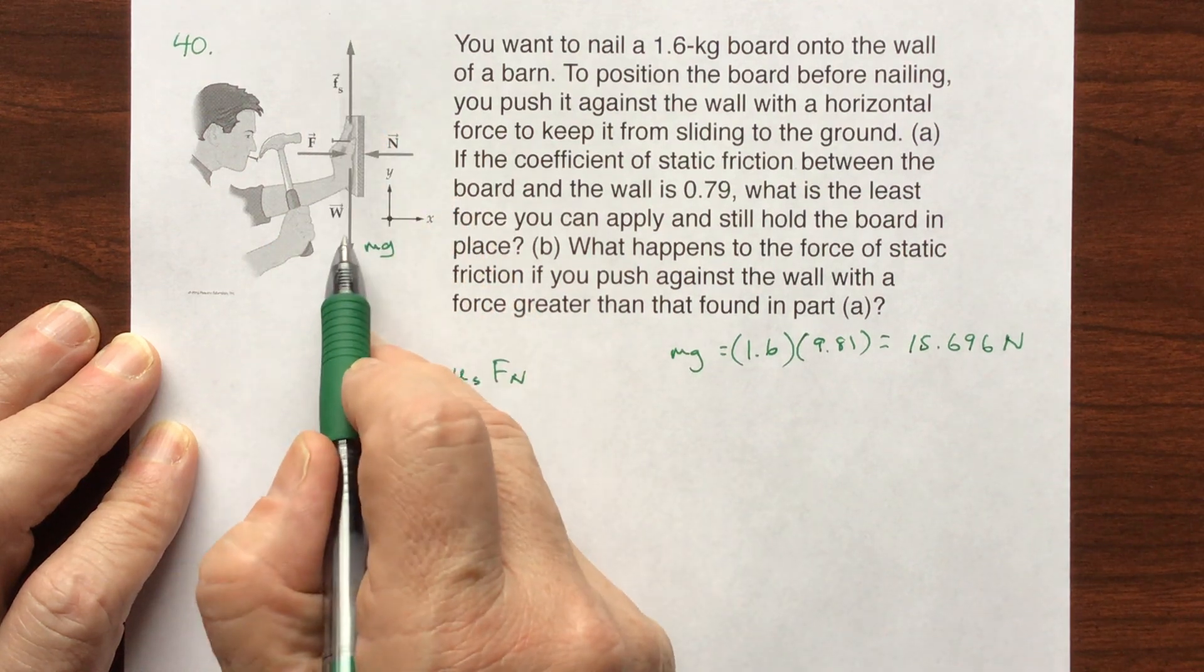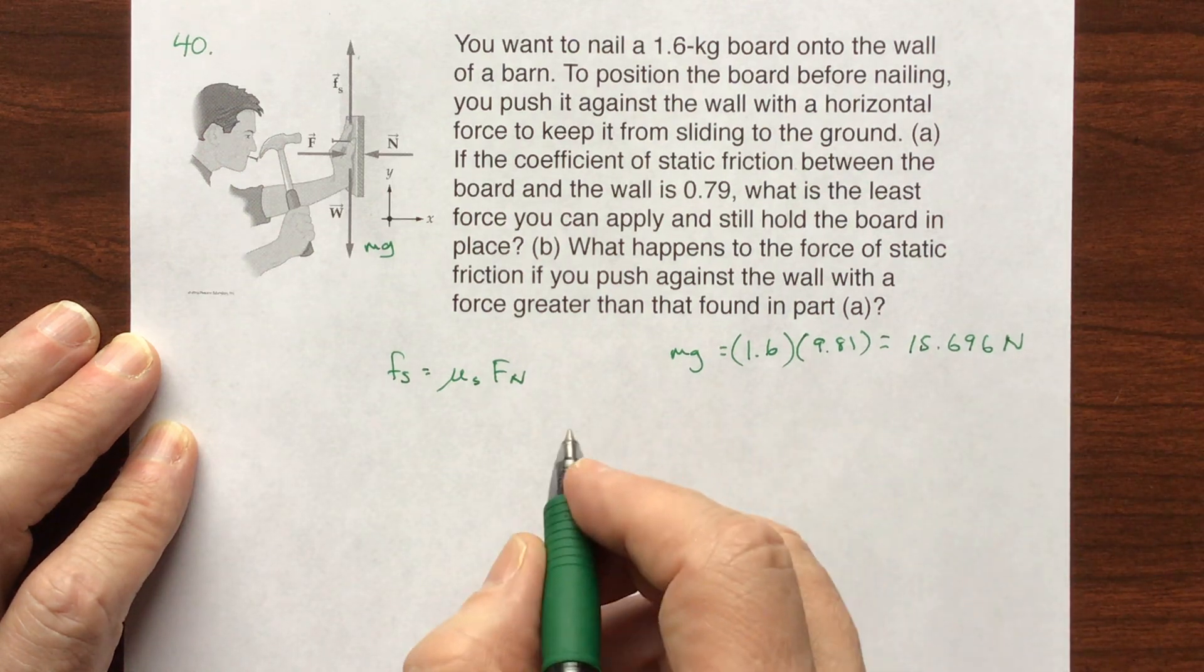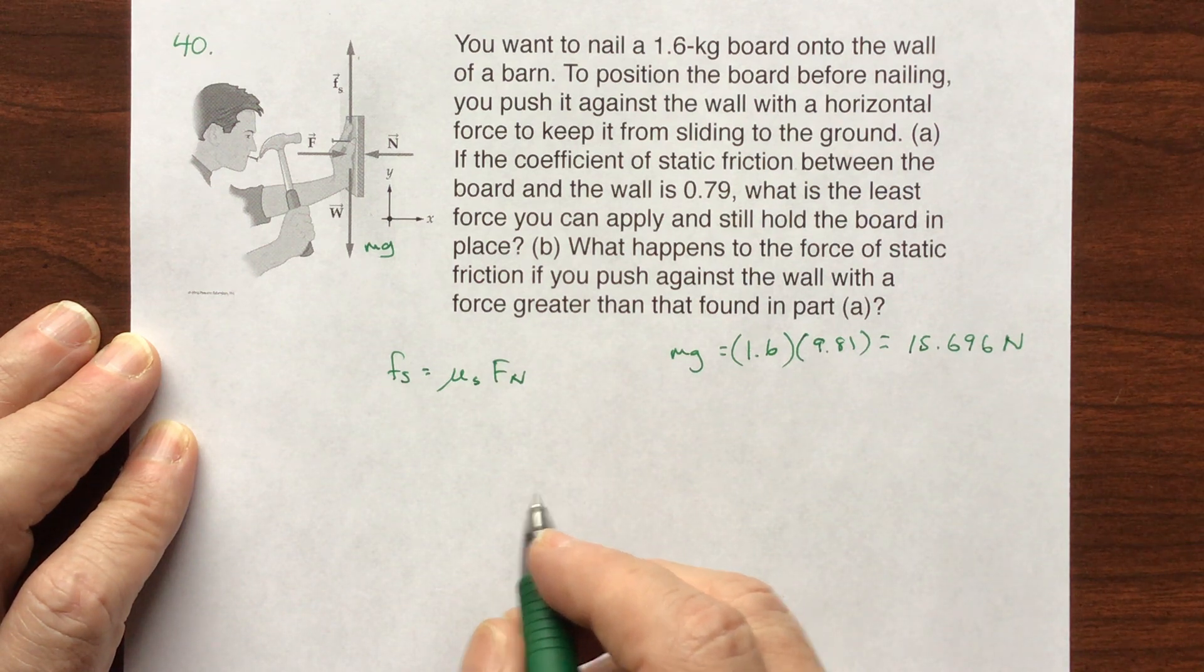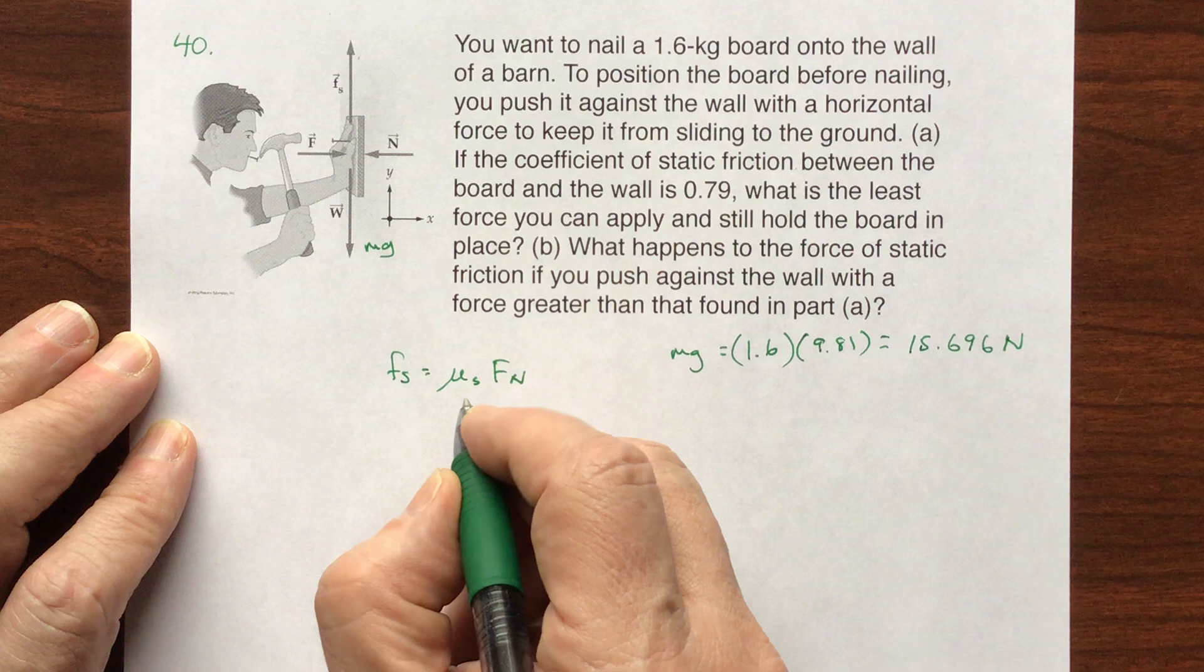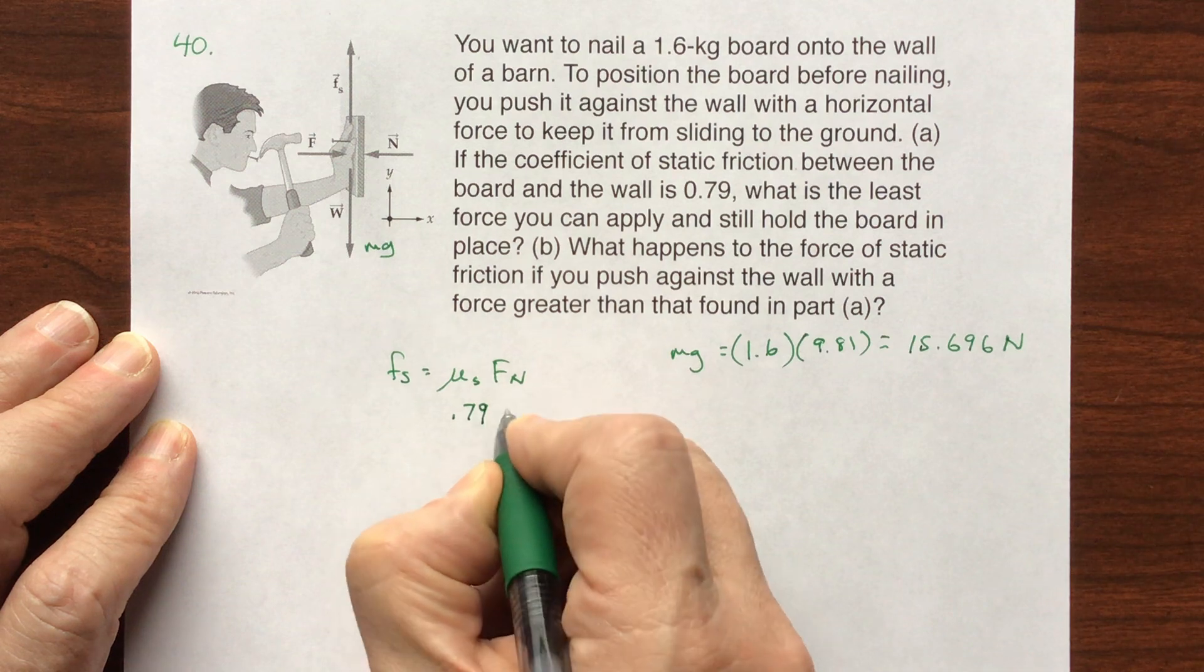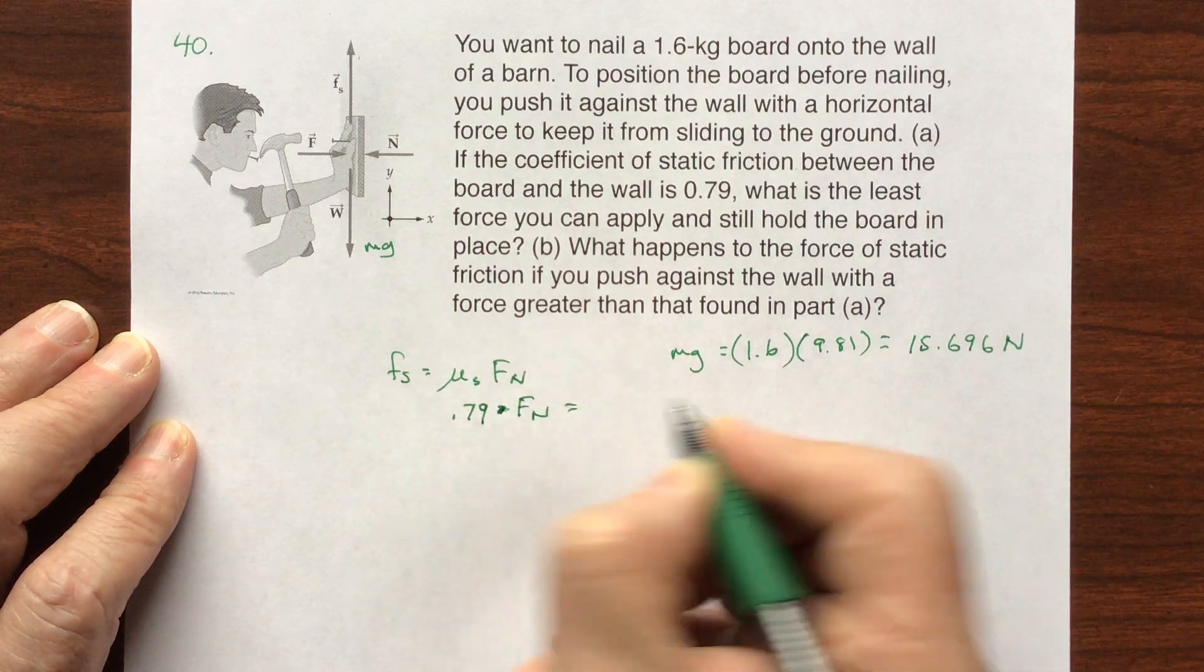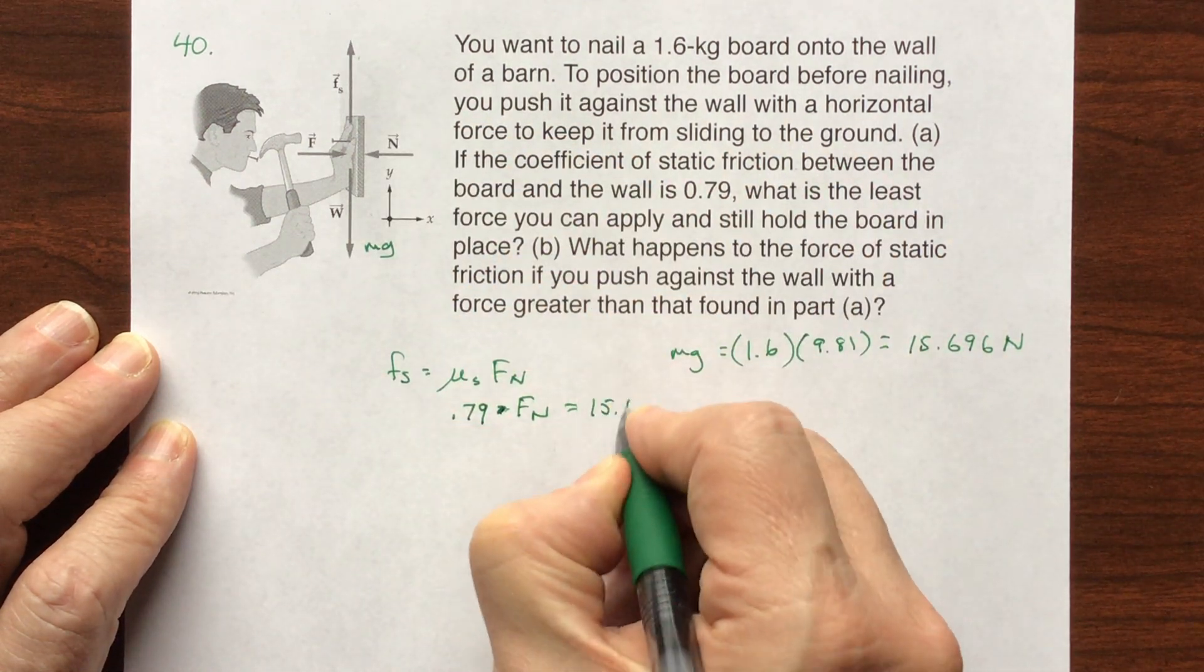fs is going to counter the weight. If this is not moving, then these two are going to be canceling. That means that fs is going to equal 0.79 times fn. fs equals the weight, and that's going to be 15.696.